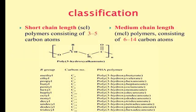Classification of PHA: PHAs are classified in two ways — short chain length polymers and medium chain length polymers. The short chain length polymers consist of 3 to 5 carbon atoms, and medium chain length polymers consist of 6 to 14 carbon atoms.